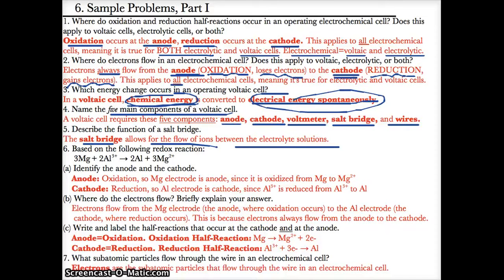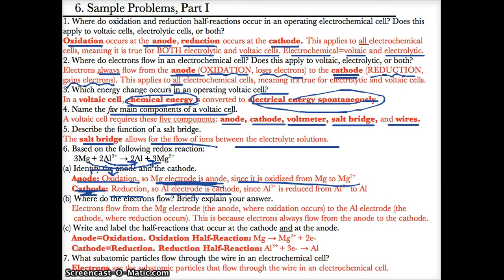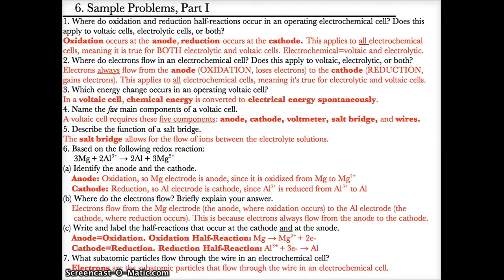The salt bridge allows for the flow of ions between the electrolyte solutions. For identifying the anode and cathode: since Mg is being oxidized based on anox, the Mg electrode is the anode. Since Al³⁺ is being reduced to Al⁰ based on red cat, the Al electrode is the cathode. Electrons flow from the Mg electrode (anode) to the Al electrode (cathode).